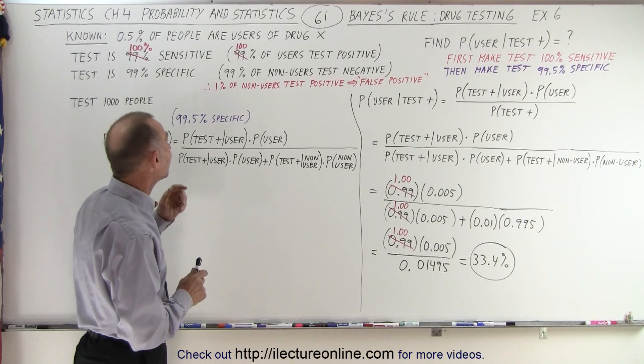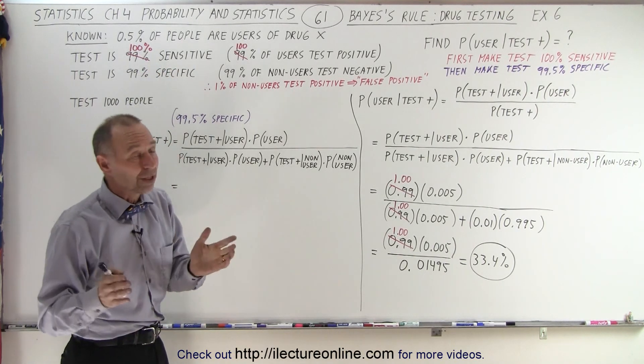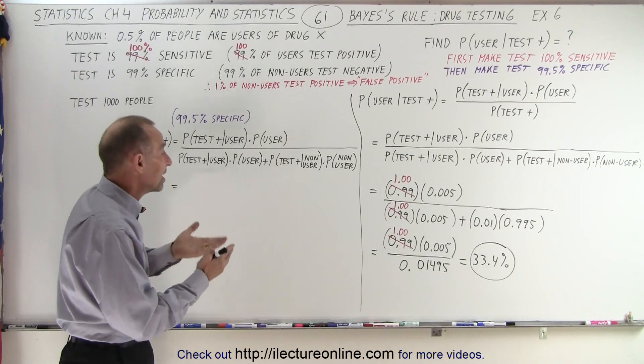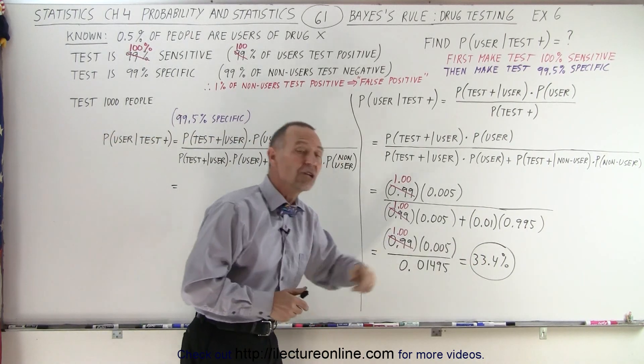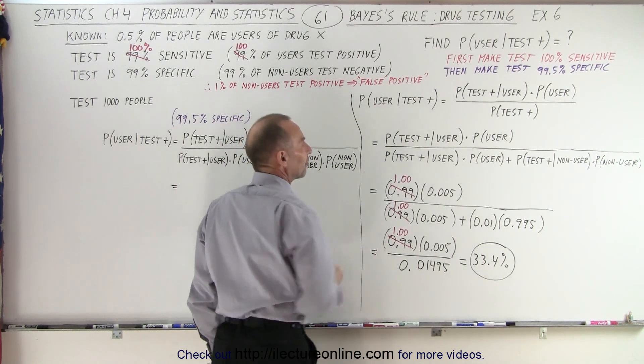It wasn't about making the test more sensitive. If you're already up at 99% that's really good. Make it 100%, you get barely any change in the probability that the person will be a user if the test is positive.